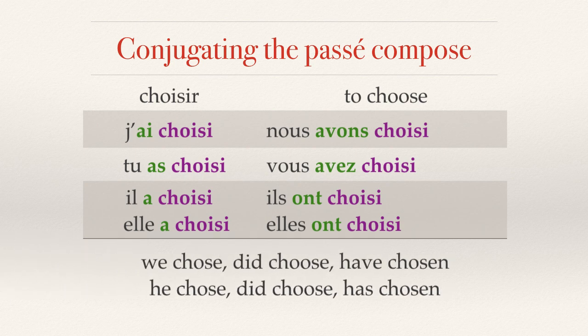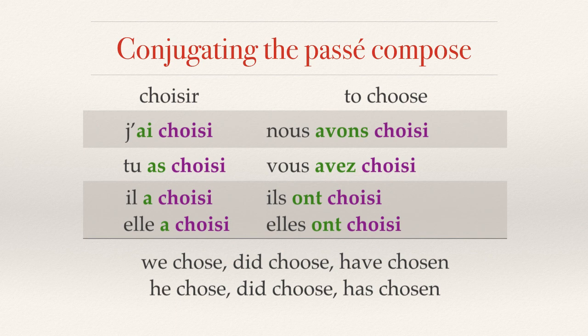We translate this: we chose, we did choose, we have chosen; he chose, he did choose, he has chosen. Notice the three verbs we just did — parler, vendre, and choisir — all happen to be irregular verbs in English, but in French they're considered regular verbs. We do not translate avoir; we translate the past participle: choisi, dansé, parlé, vendu.